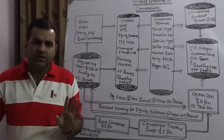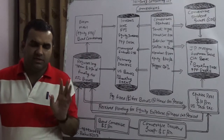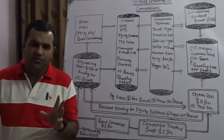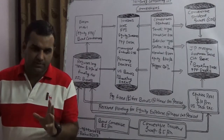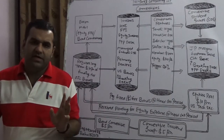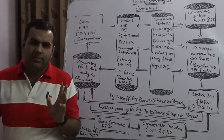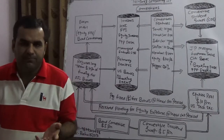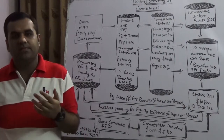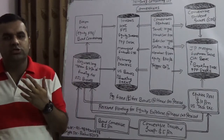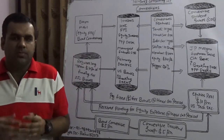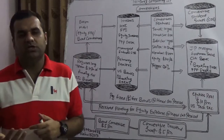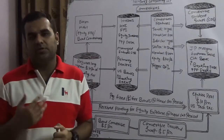We are not covering a plain vanilla topic which is convertibles. We are hereby covering a very interesting topic: how we can create a dividend swap on a convertible. We are taking an example of a big American company, ExxonMobil, and how they can not only issue a convertible but also create a dividend swap on that convertible.